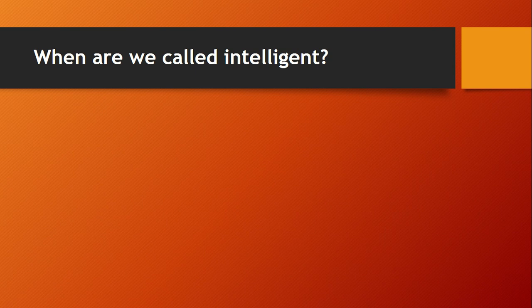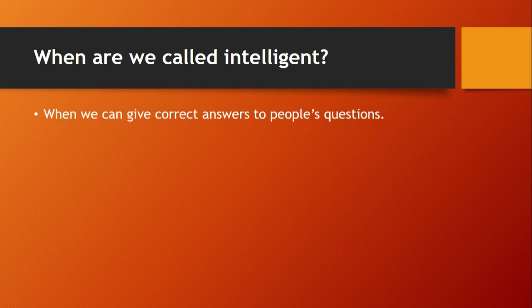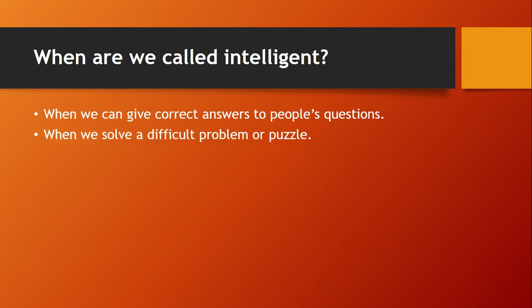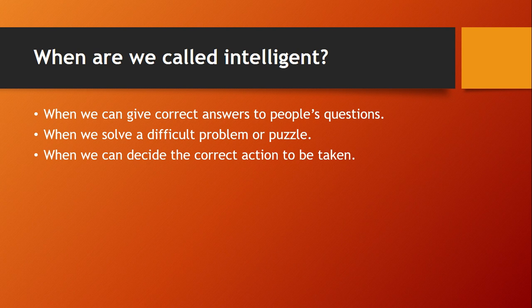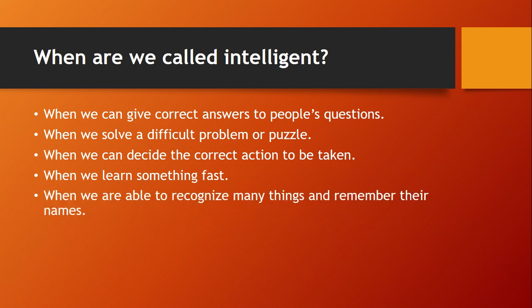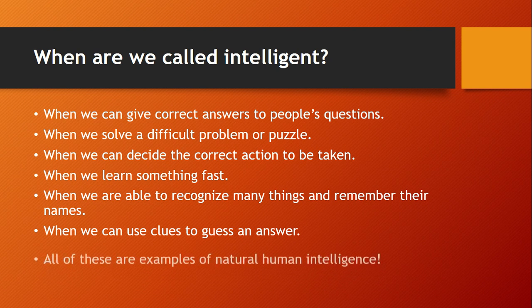My question is: when are we called as intelligent? Because artificial intelligence is about being intelligent. We are called intelligent when we can give correct answers to people's questions, when we solve a difficult problem or puzzle, when we can decide the correct action to be taken for a particular sequence, when we are learning something fast, when we are able to recognize many things and remember their names, when we can use clues to guess any answer.